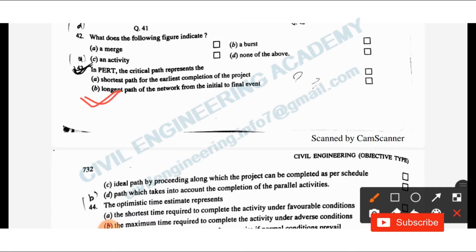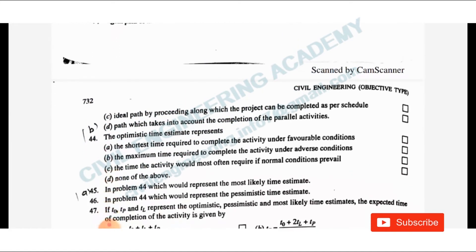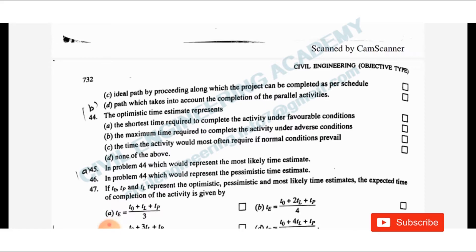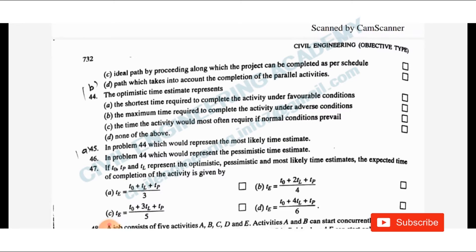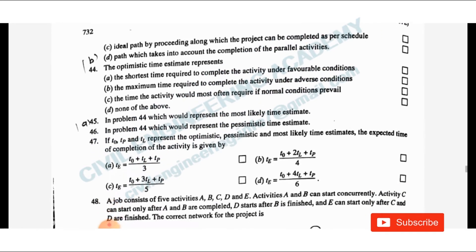Question 44: The optimistic time estimate represents the shortest time required to complete the activity under favourable conditions — option A is the answer. The pessimistic time is the maximum time required under adverse conditions. The most likely time is the time the activity would most often require if normal conditions prevail. Optimistic is favourable, pessimistic is adverse, most likely is normal conditions.